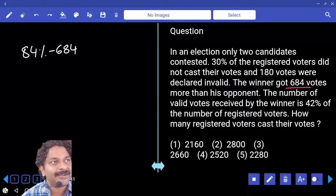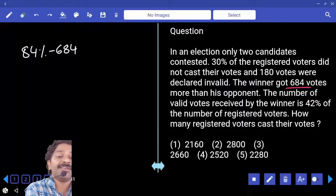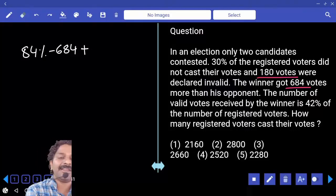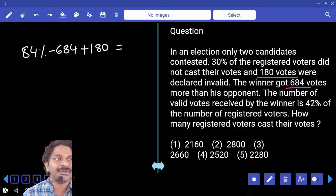To this if you add invalid votes, that becomes 70% of the votes polled. And invalid votes are 180, so I am adding 180. And this gives you votes polled which is 70%.